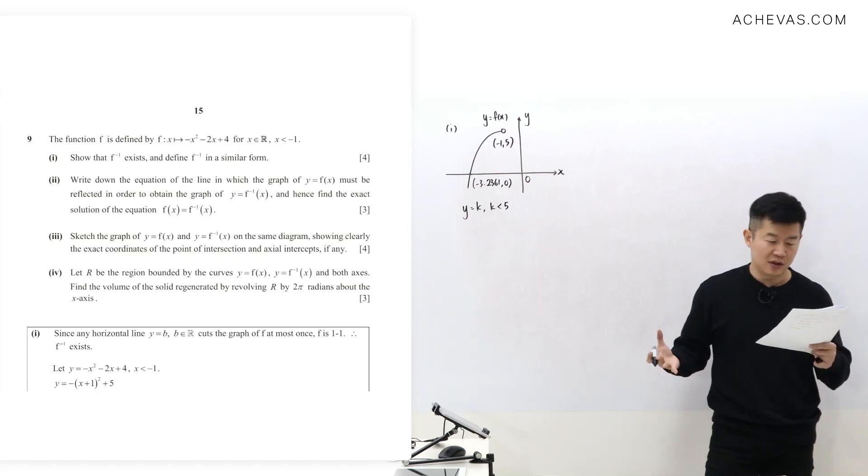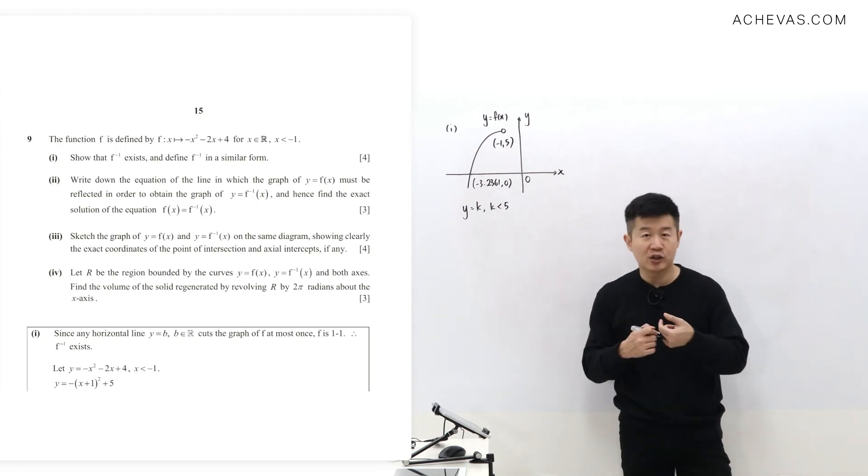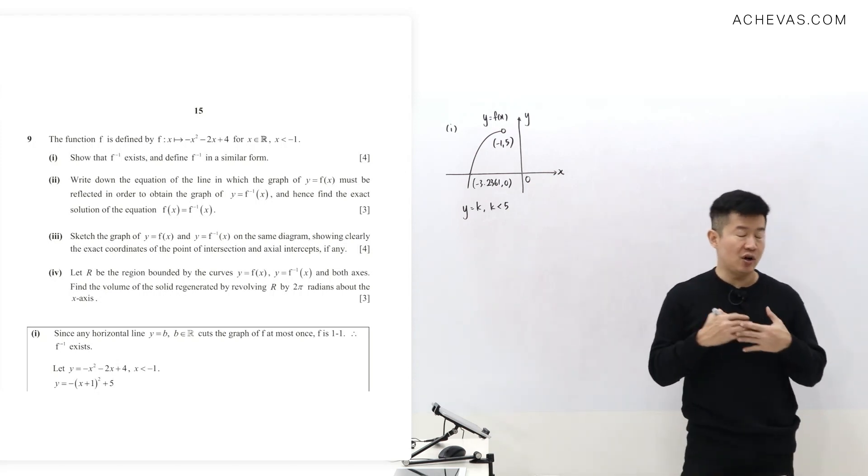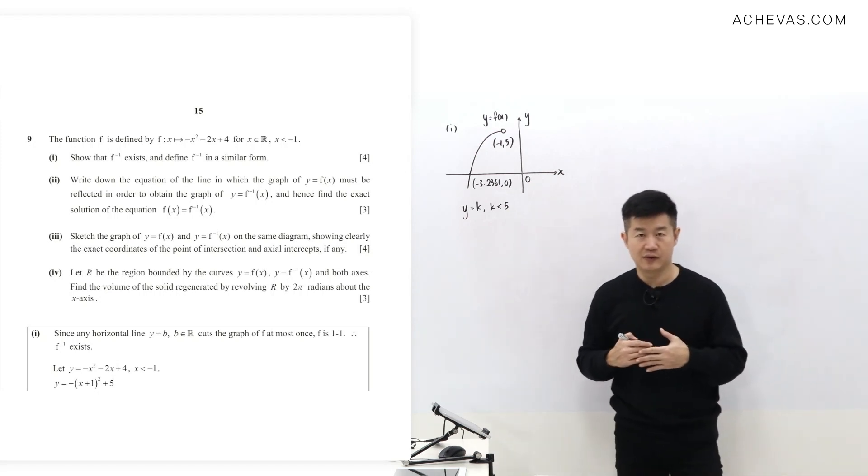Therefore, it is a one-to-one function. Therefore, f inverse exists. My aim is to talk about all the possible horizontal lines that will cut the graph. That will secure for me the two marks that is probably going to be allocated for the first part.